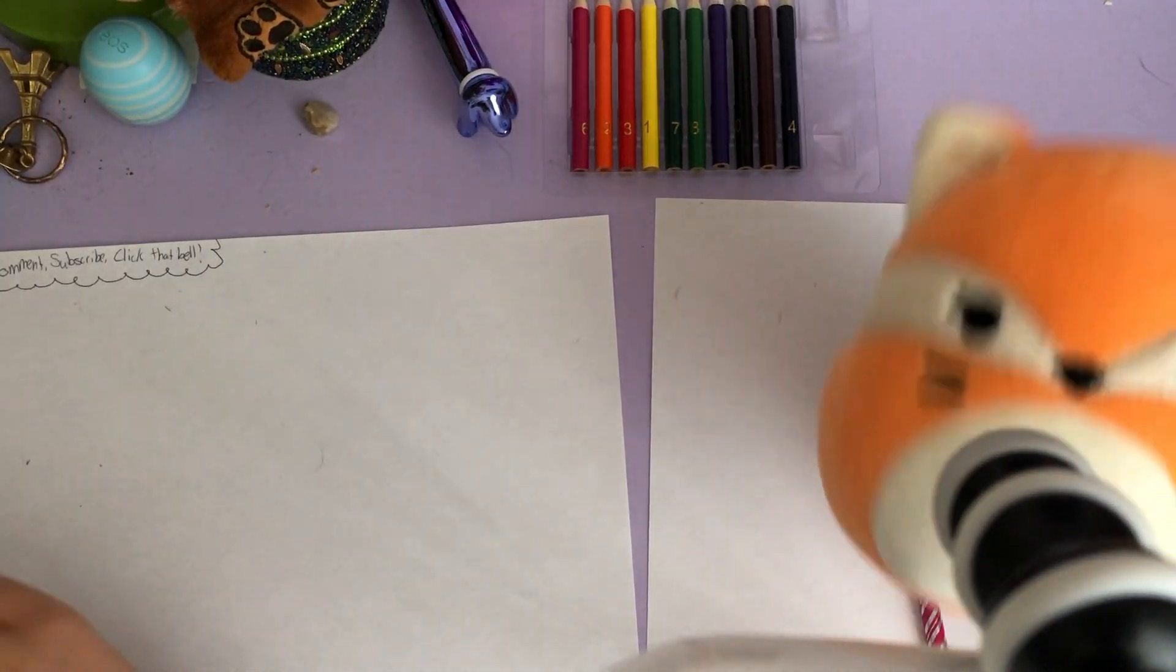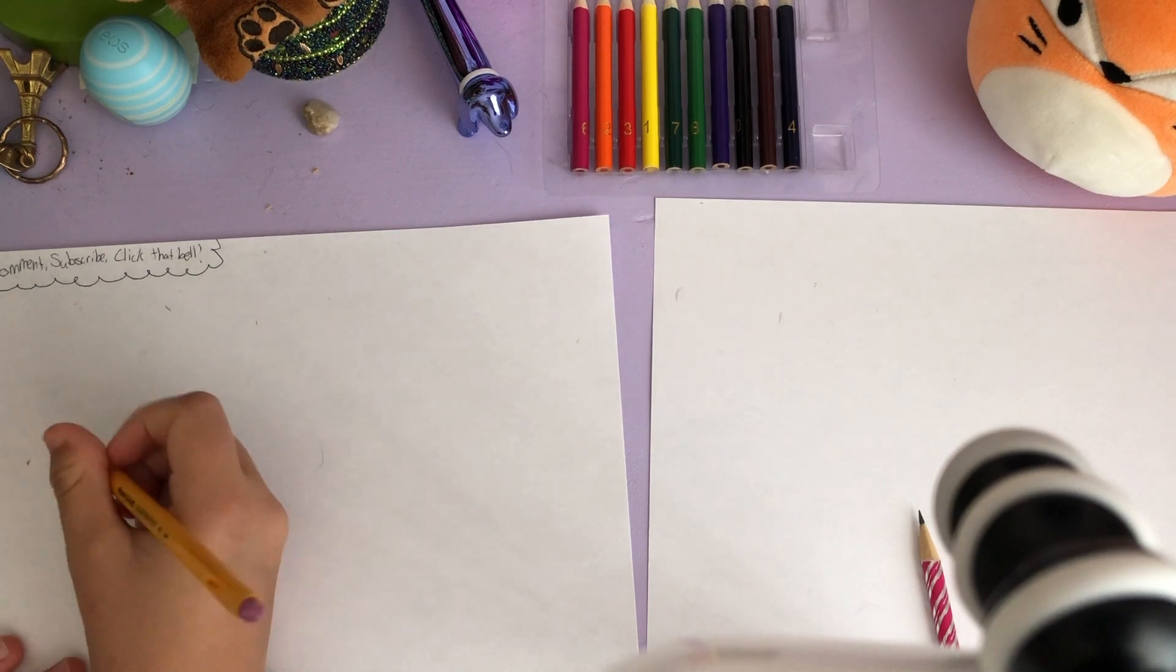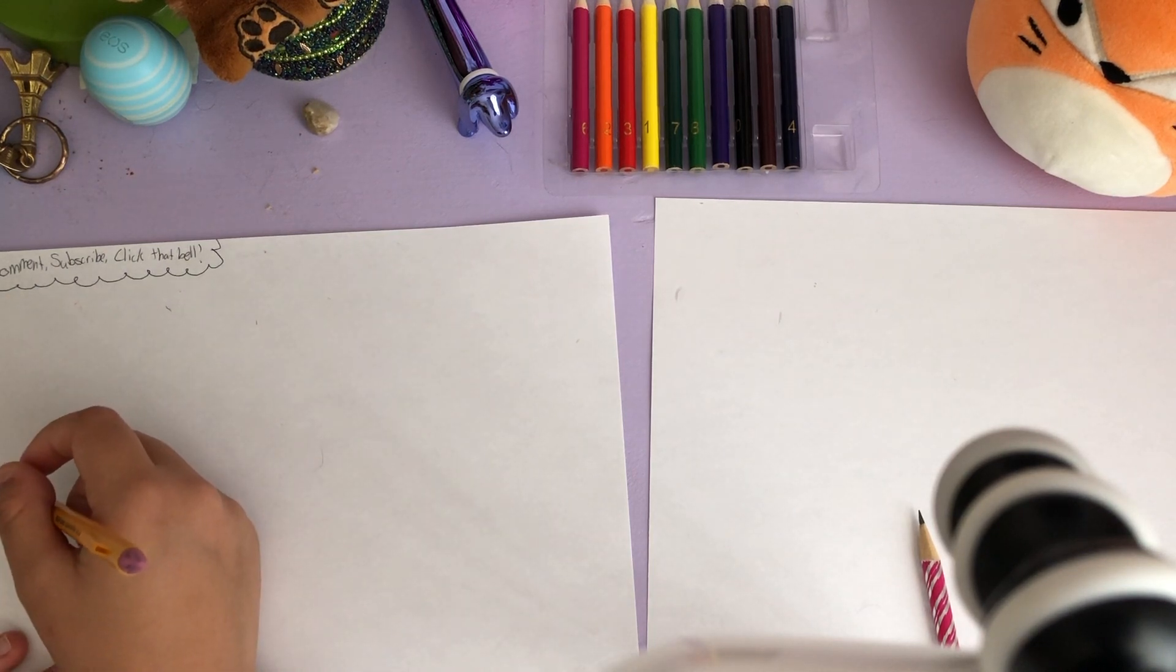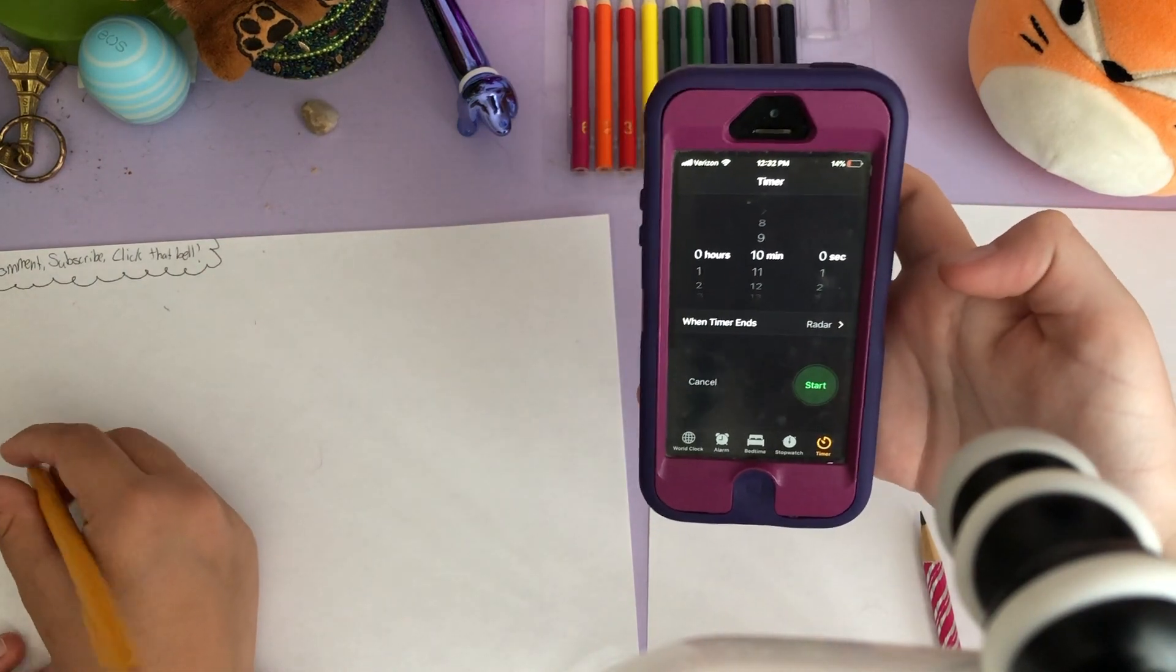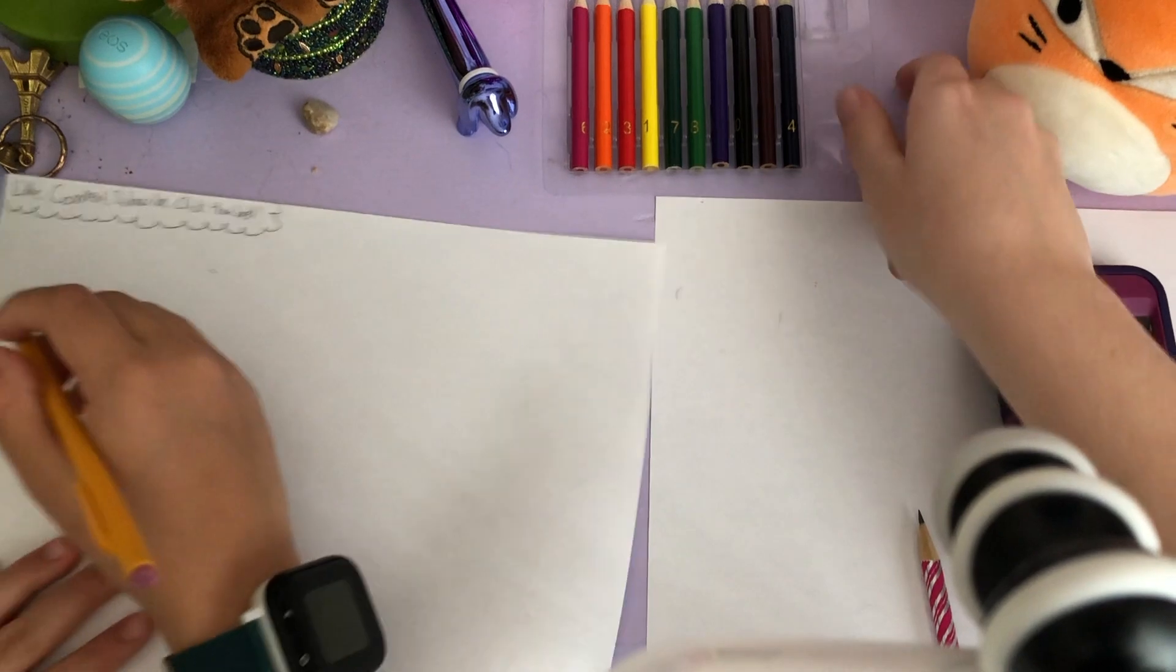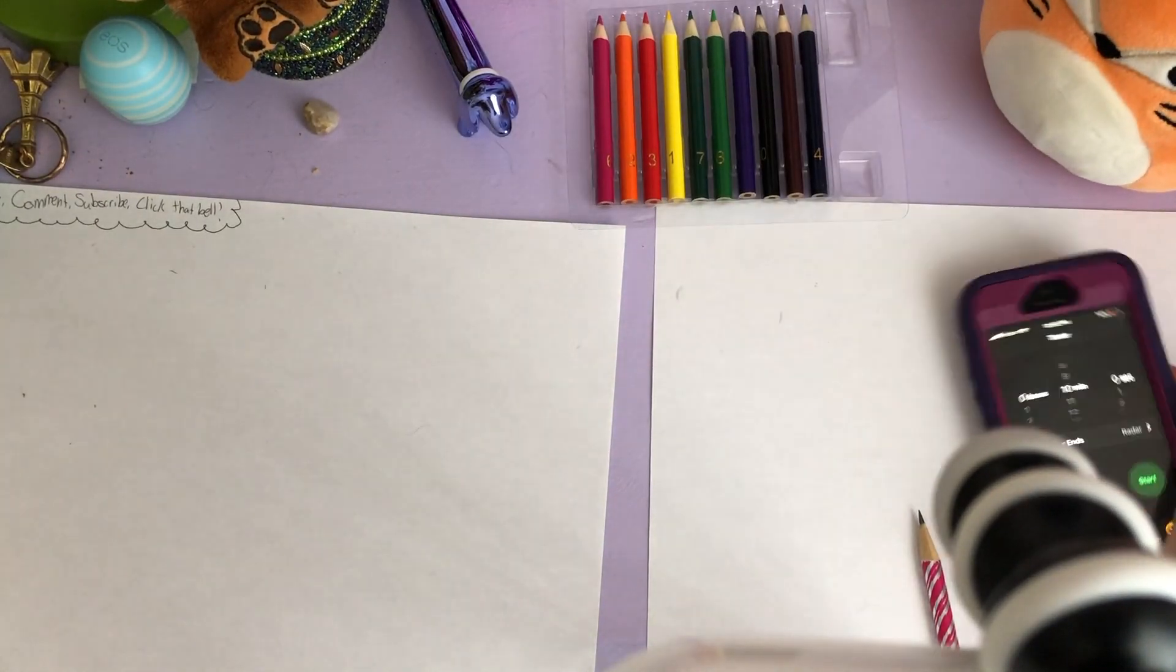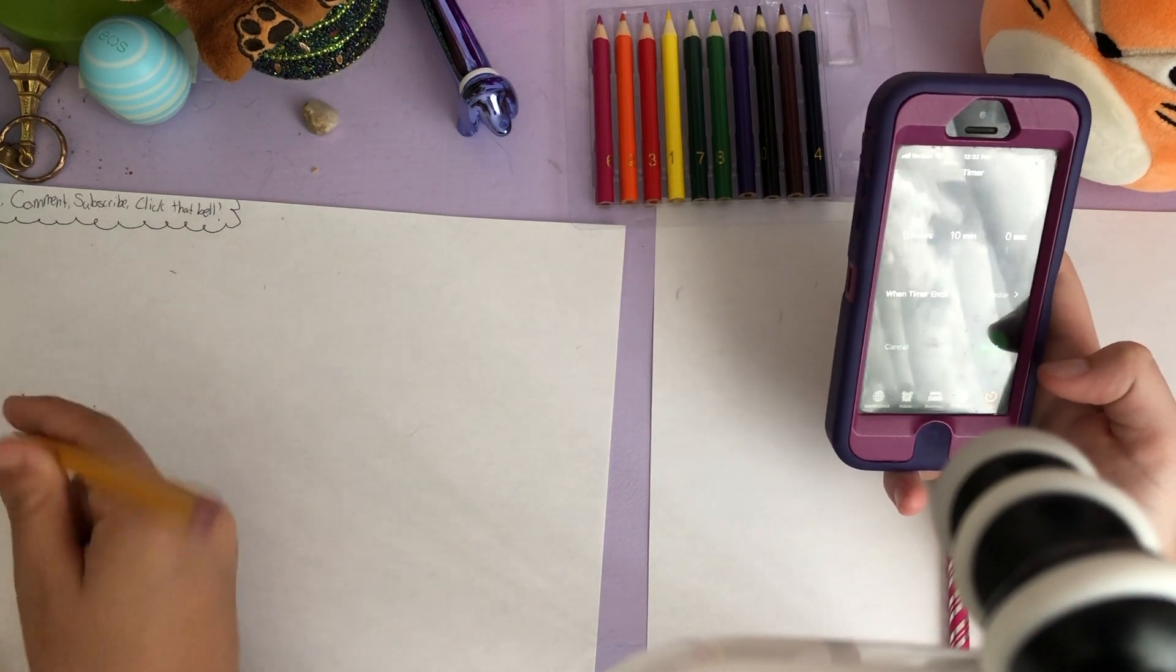Today, instead of drawing from a printed out picture, we will be replicating this squishmallow. Well, it's a fat squishmallow. The thing is, it doesn't have a lot of details and doesn't have feet. So we will be once again timed for ten minutes, which includes the coloring.